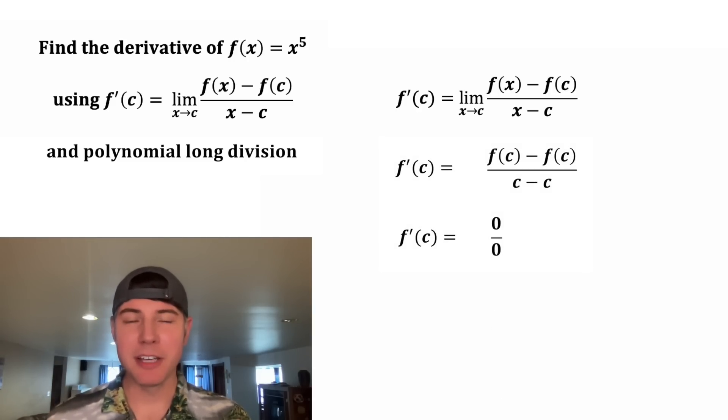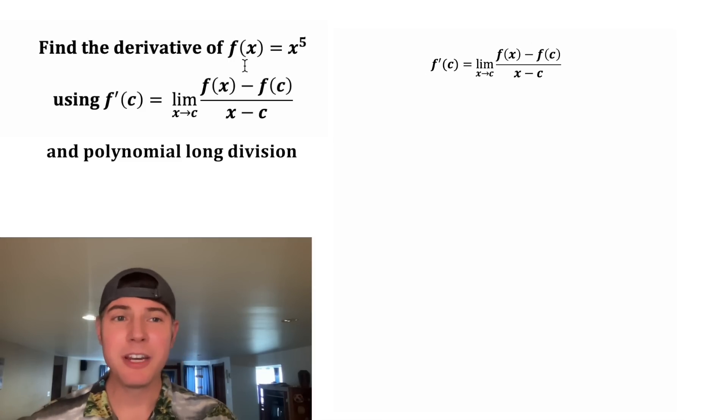If we do direct substitution and plug in c for the x, this will give us 0 over 0. So we've got to do a little bit more work. We know that f(x) is equal to x^5. So in the place of this f(x), let's plug in x^5. And then to find f(c) in the place of x, we're going to plug in c, which will make this c^5.